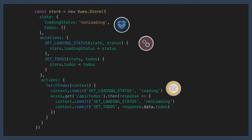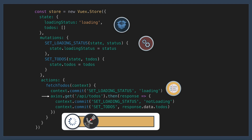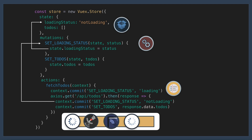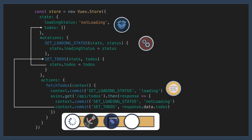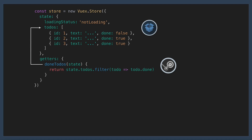Let's walk through this code. We're taking in the context object which contains all the properties of our Vuex store, which allows us to commit mutations. The first mutation we're committing is setLoadingStatus, which will set the loading status to loading. Then we're making an API call, and when that response returns, we'll commit the setLoadingStatus mutation again setting it to notLoading. And finally, we'll commit setTodos, setting the todos state with the response we got from our API call. If we need to retrieve only the todos that are labeled done, we can use a getter for that, which will retrieve only the specific state that we want.